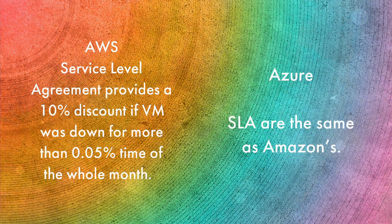The AWS Service Level Agreement states that if a VM was down for more than 0.05% of the time in a whole month, then AWS is liable to pay you a 10% discount on your monthly bill. This means that out of 43,200 minutes in a month, if the AWS Virtual Server is down for 21.6 minutes, then AWS is liable to pay you.